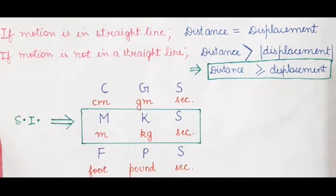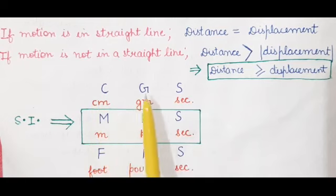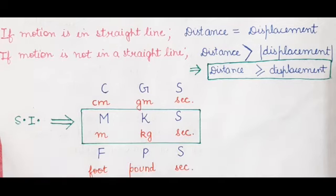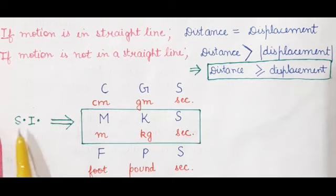Some students may have confusion about the SI unit. There are three unit systems: CGS stands for centimeter, gram, second; MKS stands for meter, kilogram, second; and FPS stands for foot, pound, second. The MKS system is considered the SI unit system. That is why the SI unit of distance and displacement is meter. Data should always be taken in SI units.